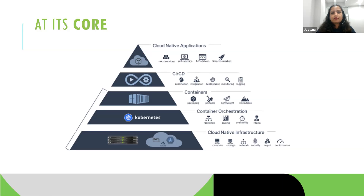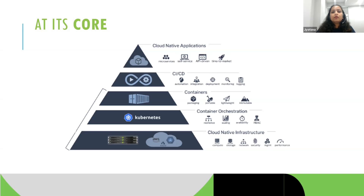The next important pillar is having a CI/CD ecosystem in place. Whenever DevOps is mentioned, CI/CD is always in the picture — continuous integration and continuous deployment. It gives you an audit trail of all changes made to a software, from pull request to production. Your developers will have continuous feedback about the changes happening.